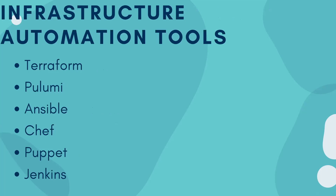For infrastructure automation tools, you need knowledge of Terraform, Pulumi, Sibyl, Chef, Puppet, and Jenkins. Notice that Jenkins appears here again — some tools overlap across categories. You need knowledge of all of these when working on infrastructure automation.